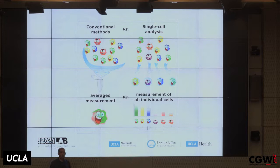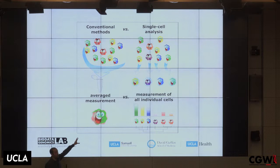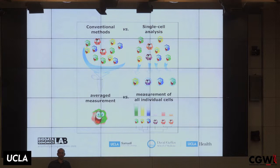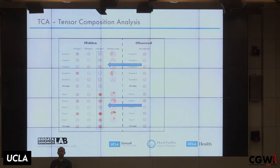One way to address this is single-cell sequencing, where you measure RNA or methylation for each individual cell. However, for methylation, this doesn't really work at large scale — people maybe do one or two samples. For RNA, it costs a few thousand dollars per sample, so you can't do large studies this way. It would be great if we could emulate this process computationally, which is what I'll show now.